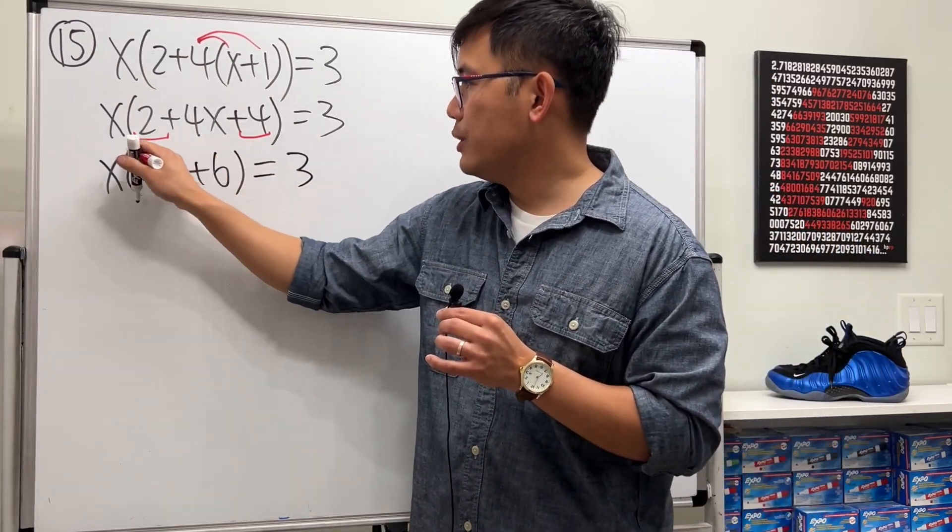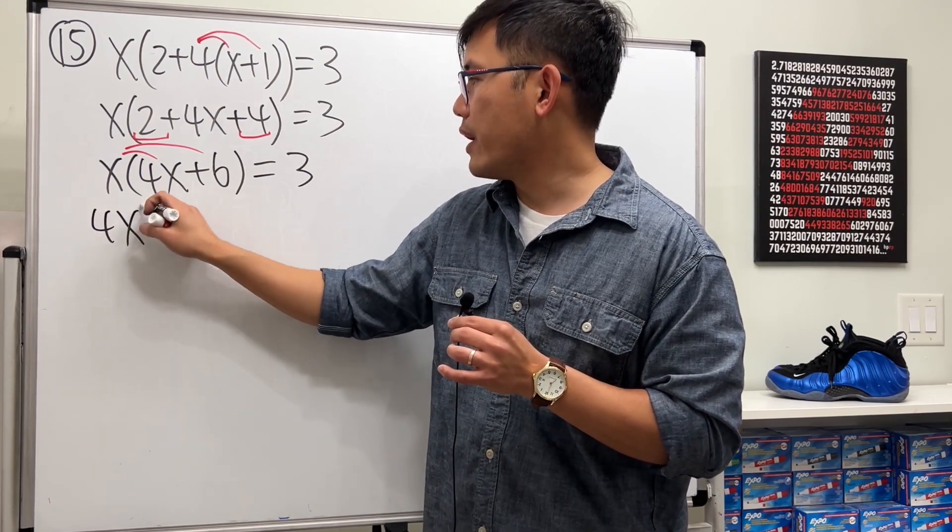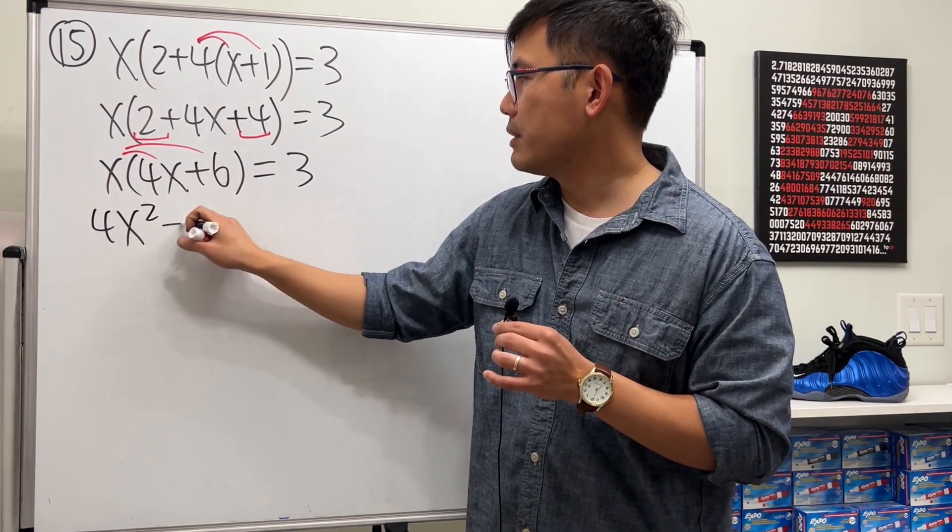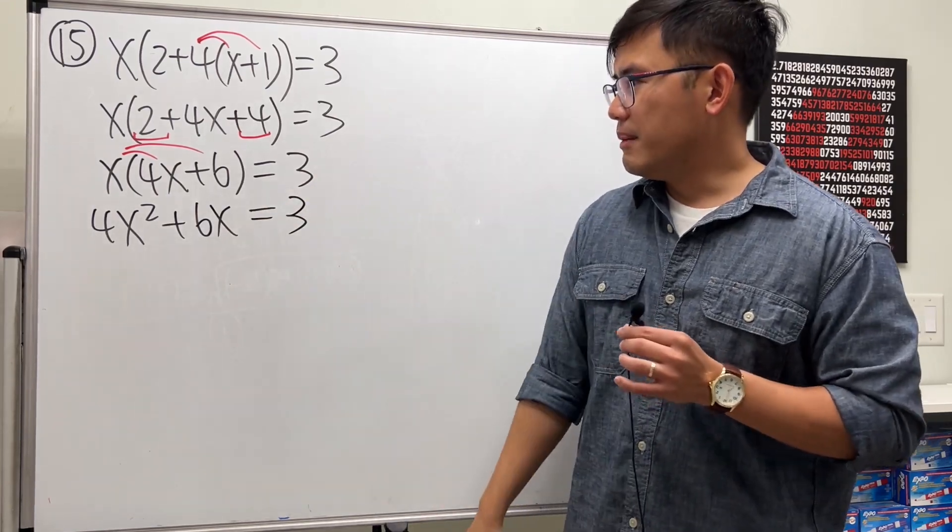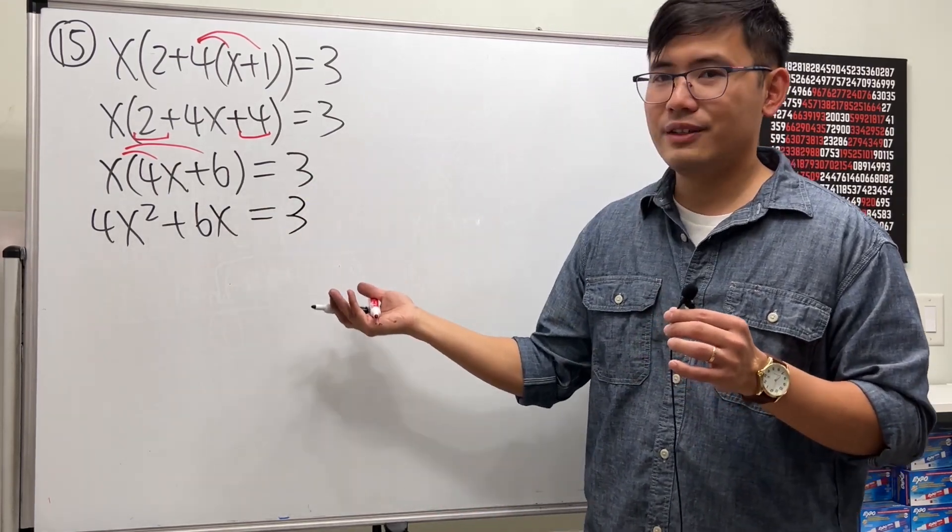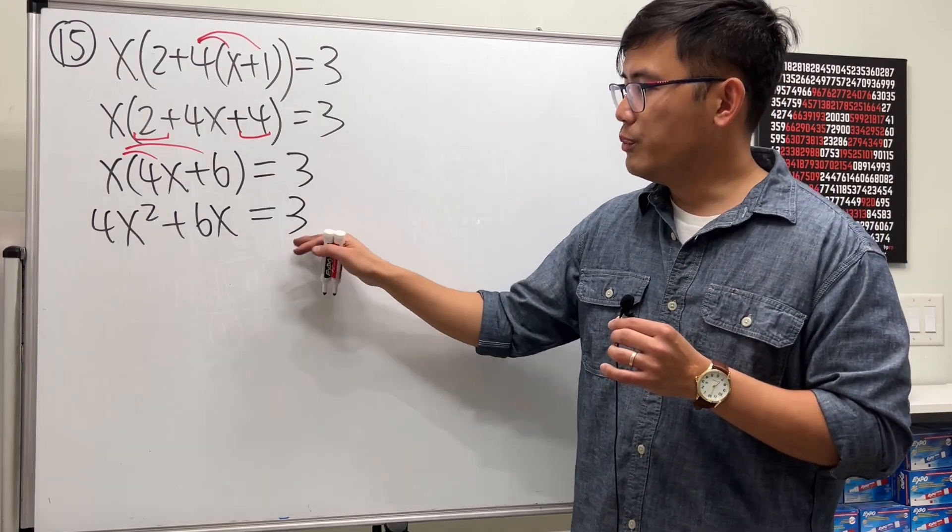Here we distribute the x inside, so we get 4x² and then we have plus 6x, and this is equal to 3. And yeah, that's pretty much it for the fixed part, right? But now if we move the 3 to the other side...